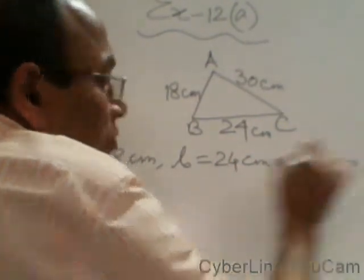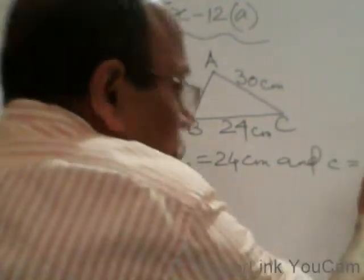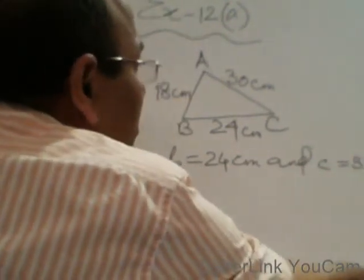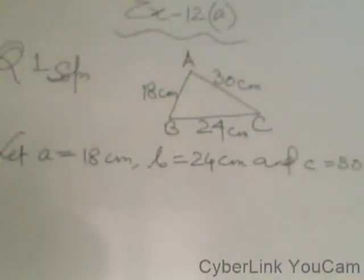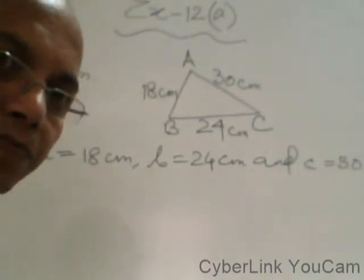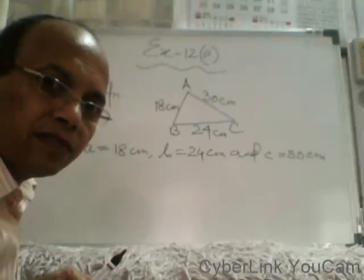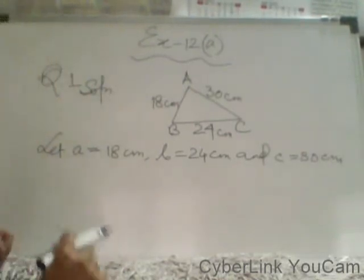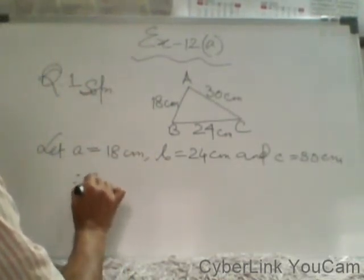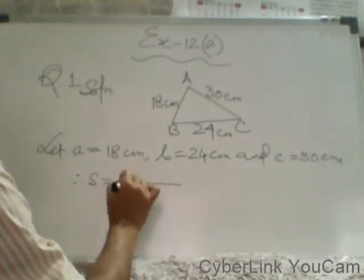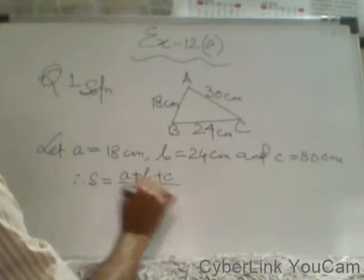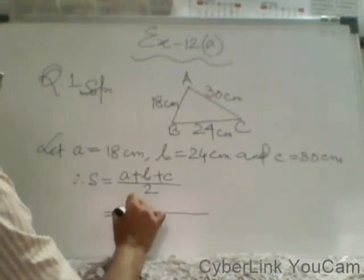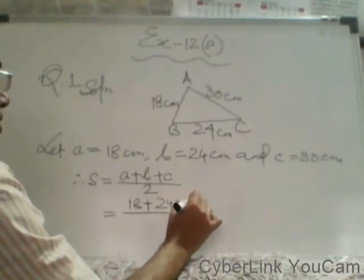And small c equal to 30 centimeter. Now you calculate the value of s: s equal to (a plus b plus c) divided by 2. Then a is 18 centimeter plus 24 centimeter plus 30 centimeter divided by 2.